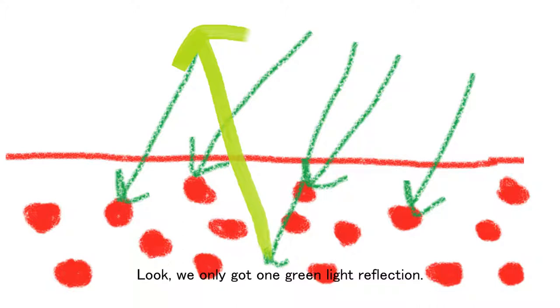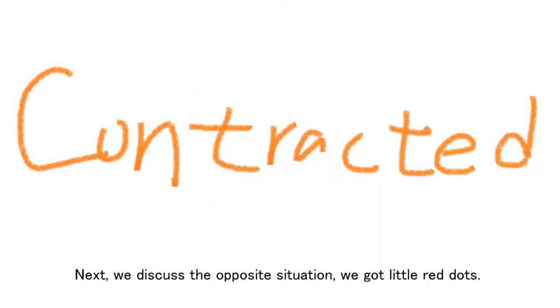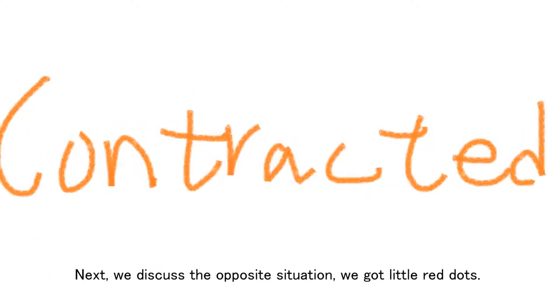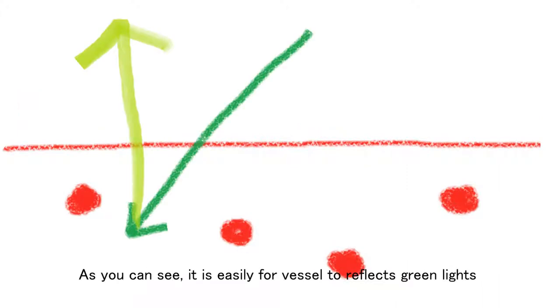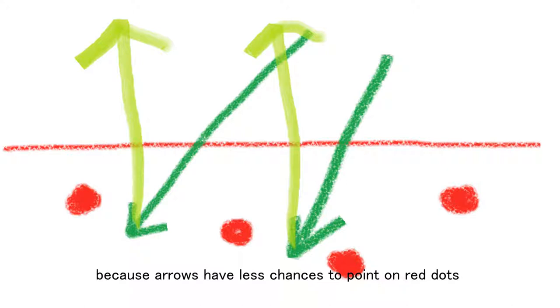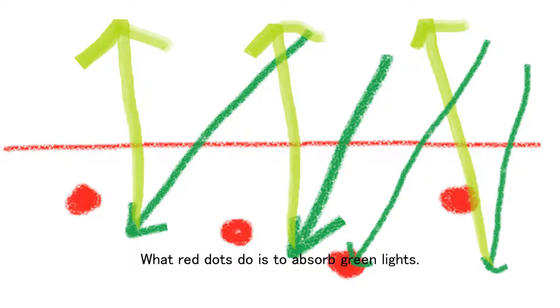light reflection. Next, we discuss the opposite situation. We got little red dots. As you can see, it is easier for the vessel to reflect green lights because arrows have less chance to point to red dots. What red dots do is absorb green lights. This is the concept of the way how smartwatches measure your heartbeats. Thanks for